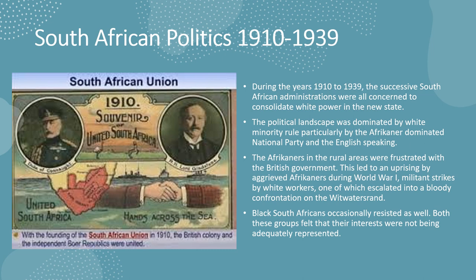Now let's look at South African politics, 1910 to 1939. In 1907, a significant development took place in South Africa when the British and the Boers reached an agreement to establish a unified government — on the agreement that Africans would be kept out. This laid the foundation of what would be later known as the Union of South Africa. The union constitution that was drafted limited power and representation to the white population, marginalizing the black majority.